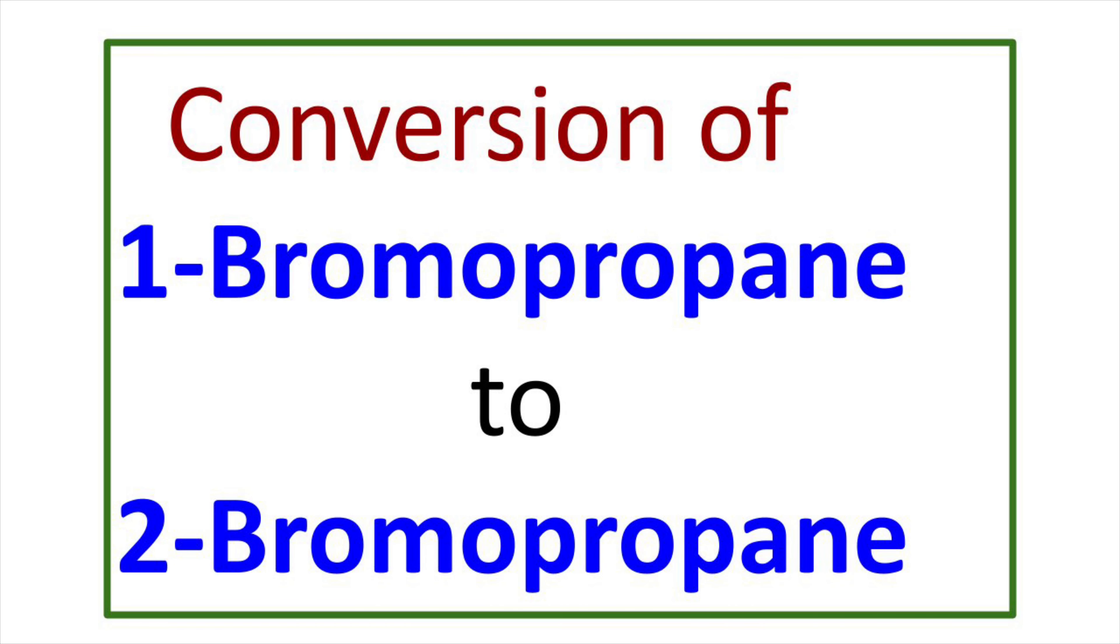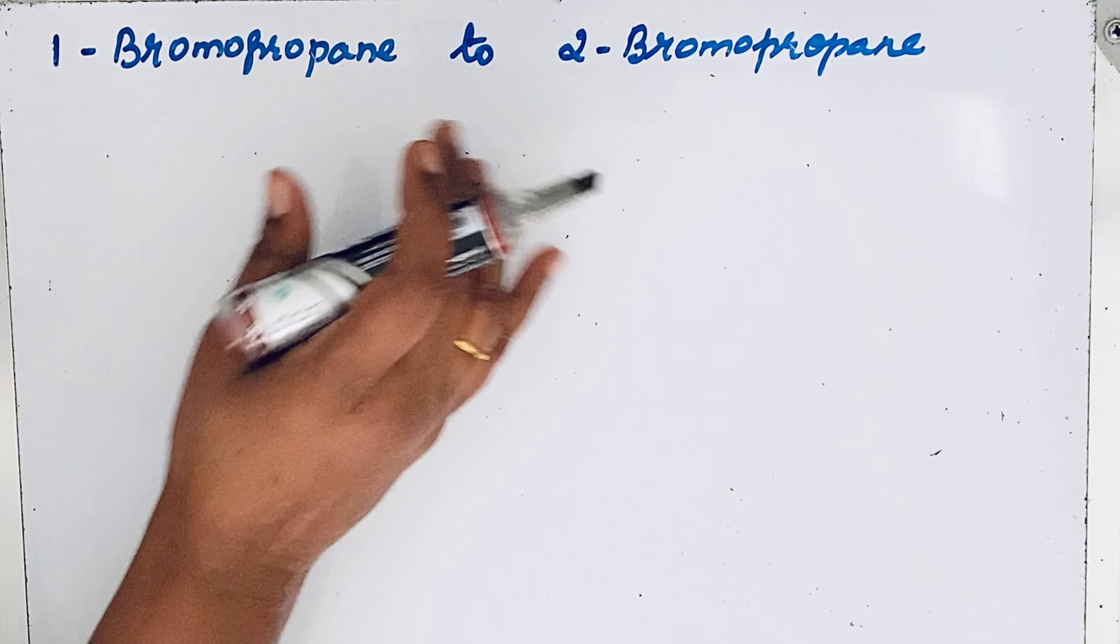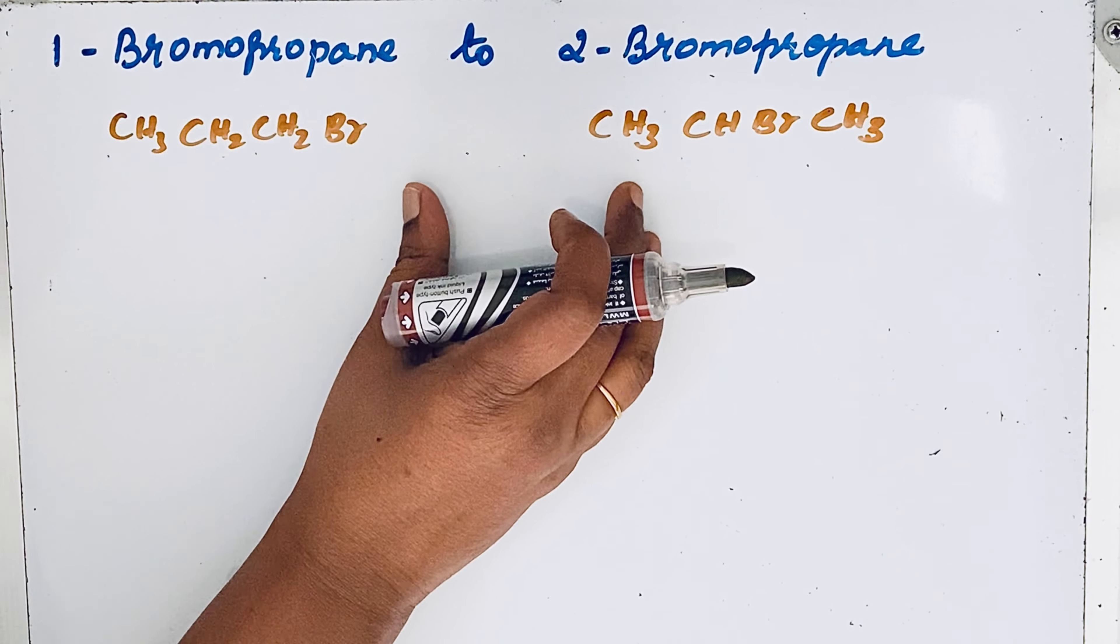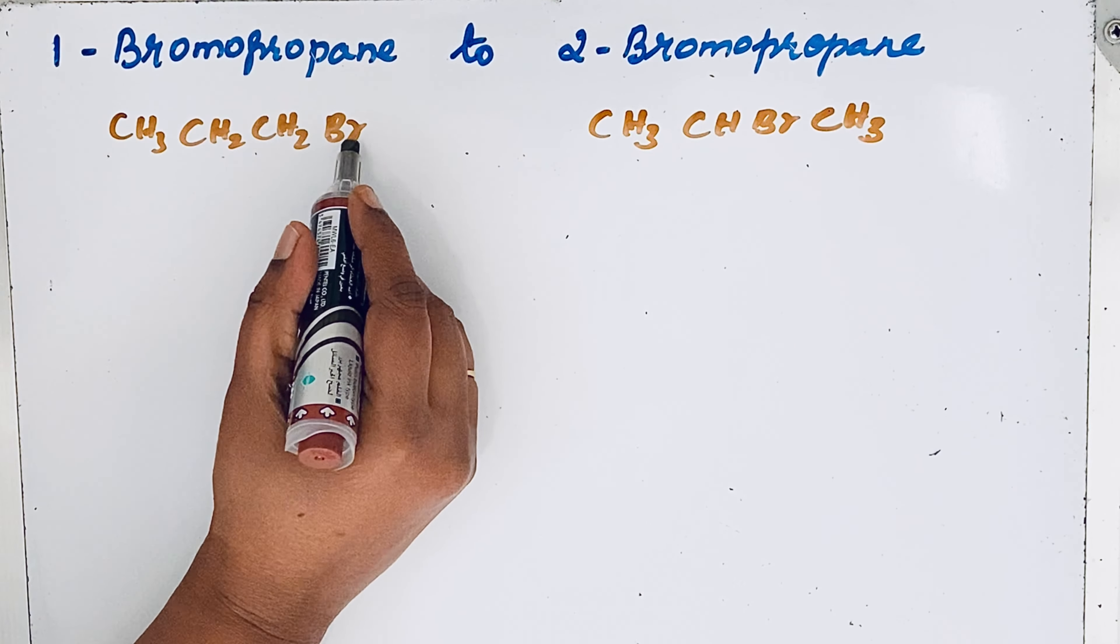Welcome to Aurora Chemistry for Everyone. Let us see how to convert 1-bromopropane to 2-bromopropane. Both are alkanes, so first let us draw the structures. If you see these compounds, only the position of bromine is changed.